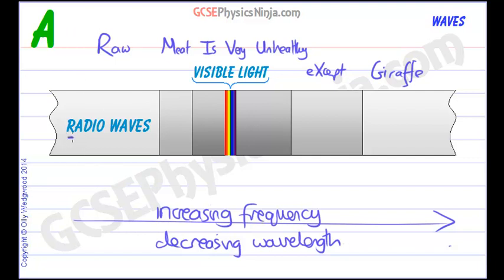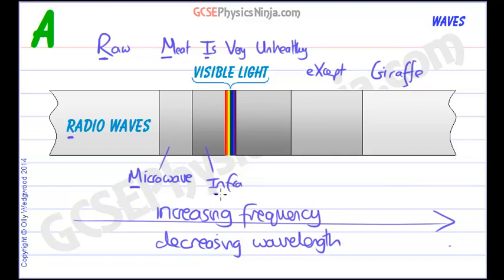First of all, R is for radio waves. M stands for microwaves — these are what are used in your mobile phone and in microwave cookers. I stands for infrared — for example, heat radiation from the sun is infrared waves.